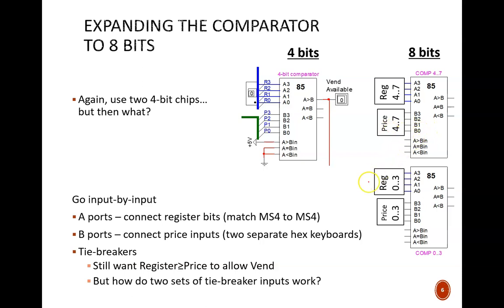One set of inputs remains: the tie breakers. We still want a vend output to be available if the register matches the price exactly, or if the user overpays.